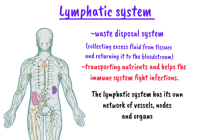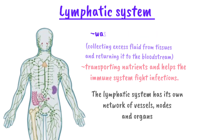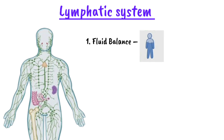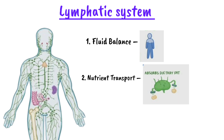So why should we learn about the lymphatic system? Number one is fluid balance — it prevents fluid from building up in tissues by collecting excessive fluids and returning them back into the blood. Number two is nutrient transport — it helps to move large molecules like hormones and fats into the bloodstream.